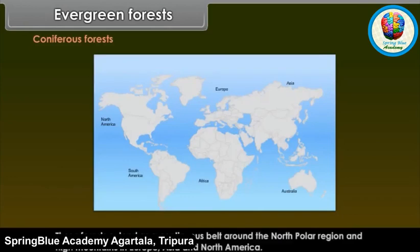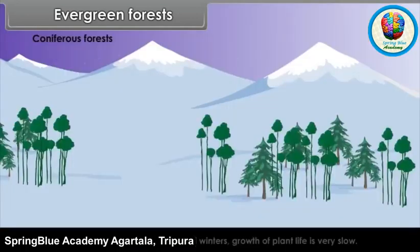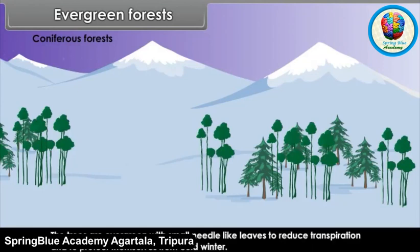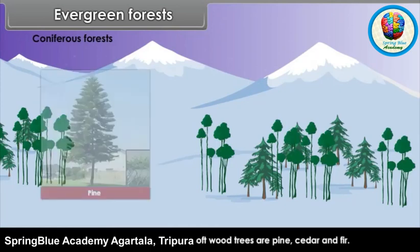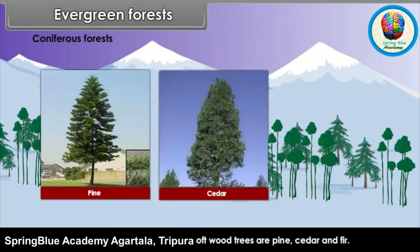Coniferous Forests: These forests extend as a continuous belt around the North Polar region and high mountains in Europe, Asia and North America. Due to low rainfall and severe cold winters, growth of plant life is very slow. The trees are evergreen with small needle-like leaves to reduce transpiration and to protect themselves from cold winter. The trees have soft wood; these softwood trees are Pine, Cedar and Fir.